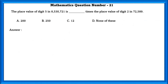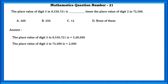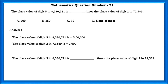Mathematics question number 21. The place value of digit 5 in 85,05,30,721 is how many times the place value of 2 in 72,589? The place value of 5 in the number is 5,00,000. The place value of digit 2 in 72,589 is 2,000. So the place value of digit 5 is 5,00,000 ÷ 2,000, which is equal to 250 times the place value of digit 2.